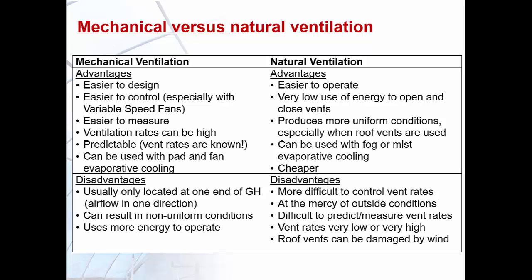Natural ventilation systems are easier to operate, use very low energy to open and close vents, and can achieve more uniform conditions in the greenhouse. They can be used with fog or misting systems for evaporative cooling and are cheaper. However, natural ventilation is more difficult to control to achieve certain ventilation rates because we are at the mercy of outside conditions. Ventilation rates are difficult to predict and measure, and roof vents can be damaged under high wind conditions.